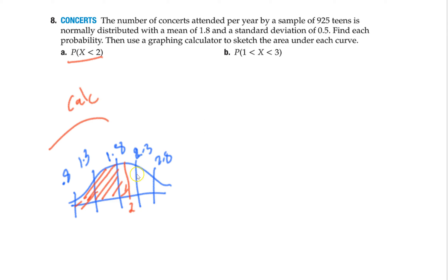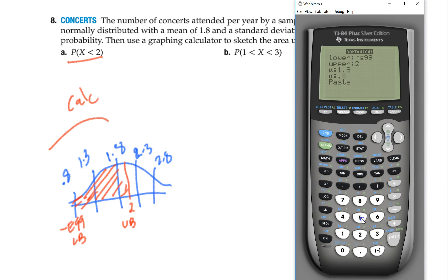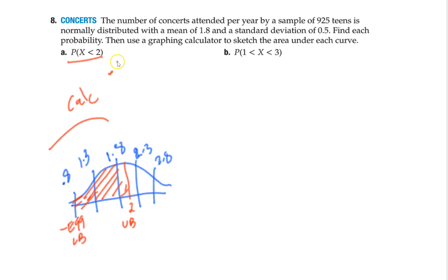On the calculator: lower bound is negative E99 (essentially negative infinity), upper bound is 2, mean is 1.8, standard deviation is 0.5. Hit paste, and you get about 0.655 — about a 66% chance that a randomly selected teen attends fewer than 2 concerts per year.